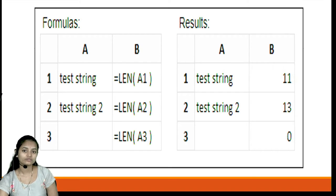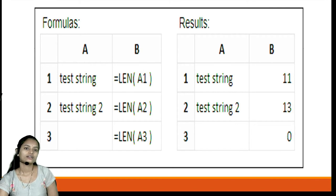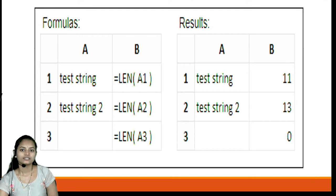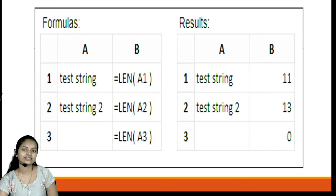In this figure, we can see the formulas and results. There are two columns, A and B. Column A contains the string and column B contains the formula. In the results table, you can see the result after applying the LEN formula. For example, the test string in A1 uses the formula =LEN(A1), and since the number of characters is 11, it returns 11.